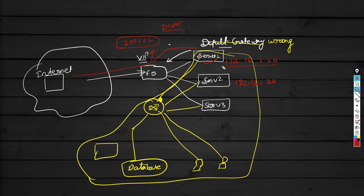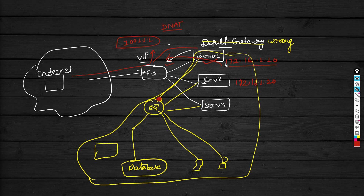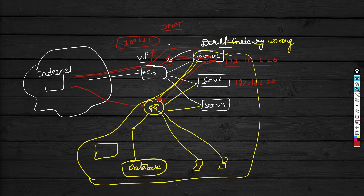When the reply comes back, it goes to the configured default gateway. In our lab the default gateway points to the F5, so reply traffic returns through the F5. But when the default gateway is configured as the router's IP address, the reply from server 1 goes to the router, and from the router it attempts to reach back to the internet — bypassing the F5 entirely.